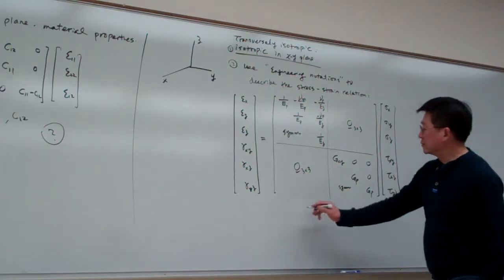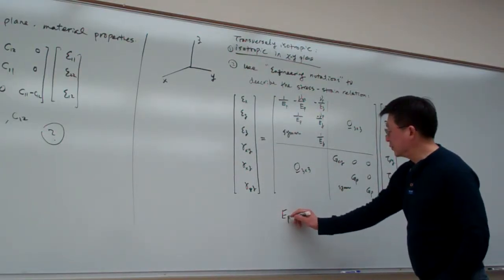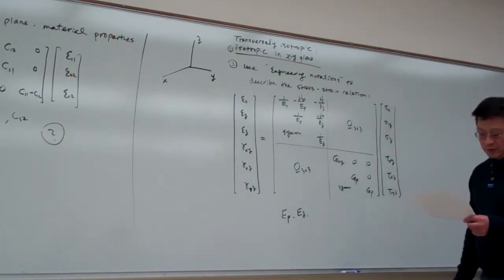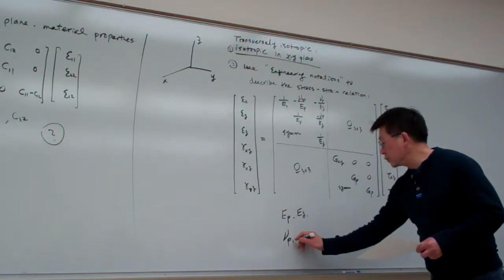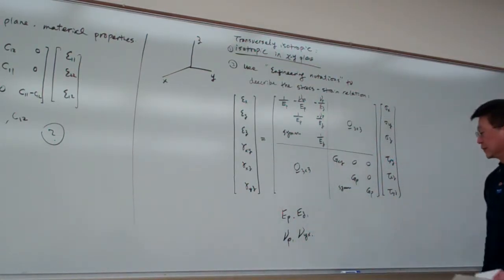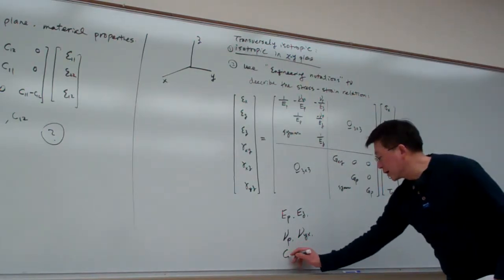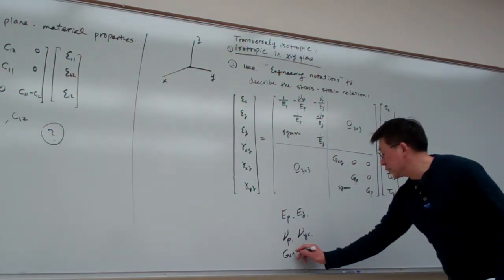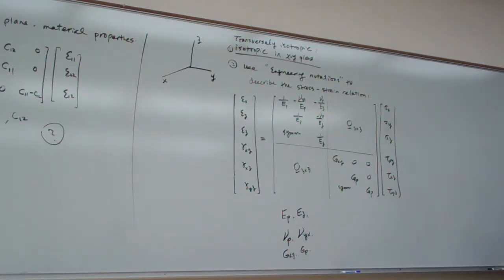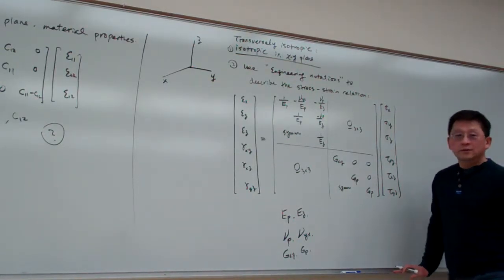So here we can count how many parameters, and e, p, and e, z. That's a two Young's modulus line. And Poisson ratio, we have two, and y, x. And then here we have the g, x, y, and g, p. These are six parameters. But here I told you that should be, that should be fine. Mistake? Probably no.